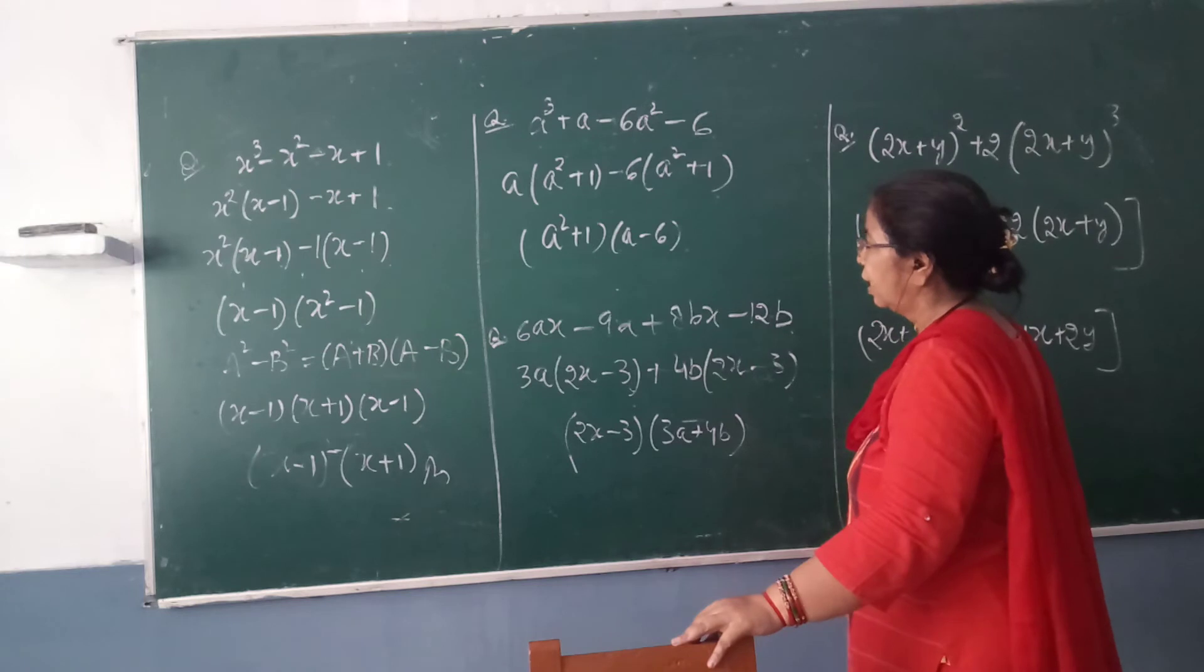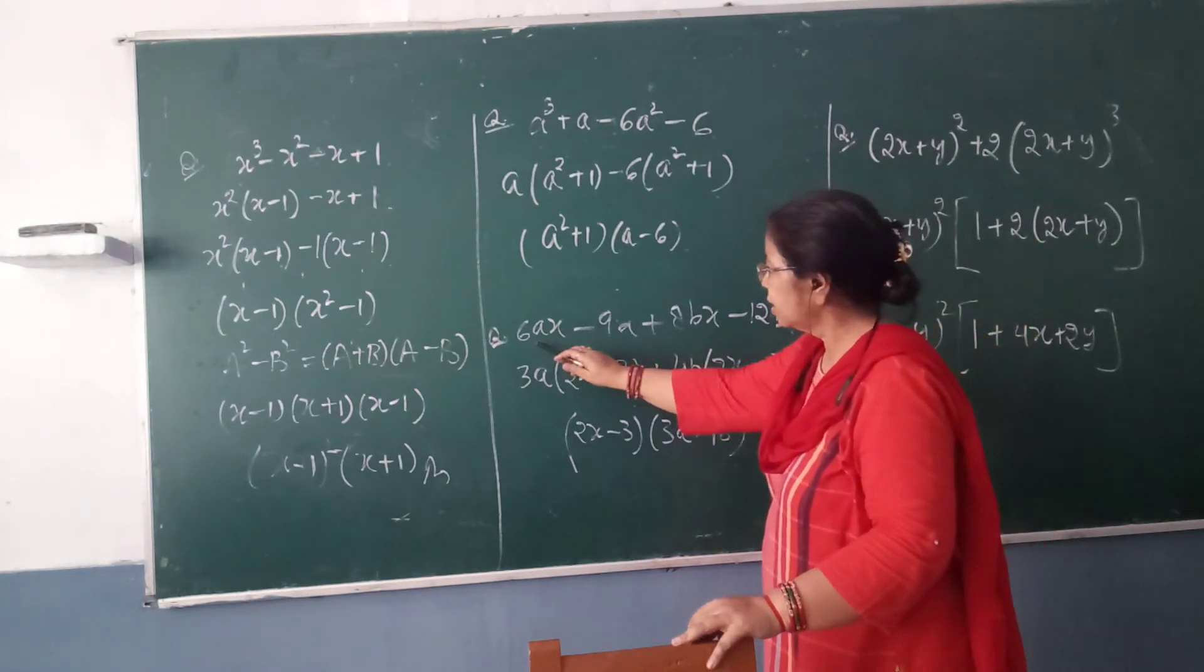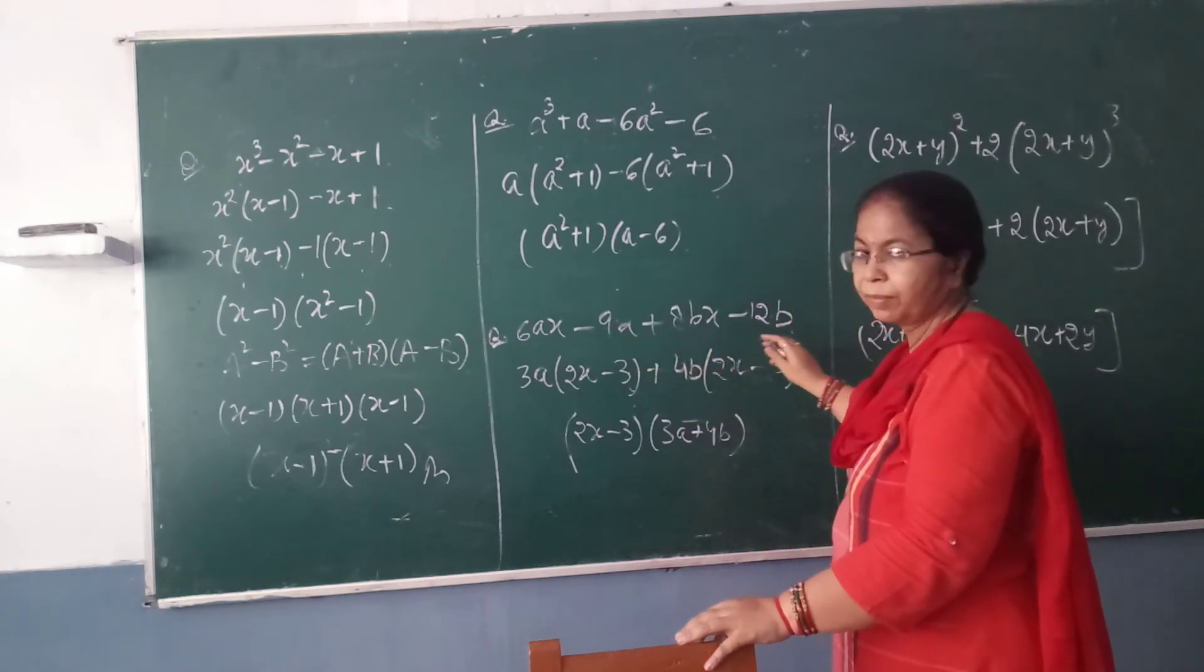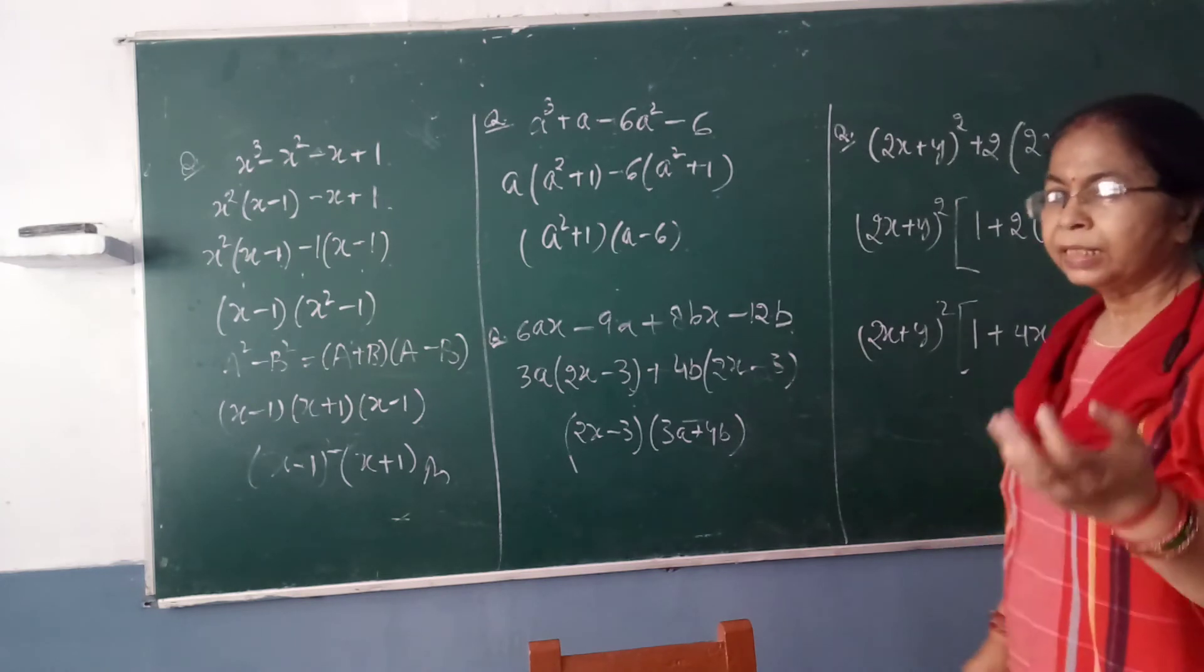Now one more question: 6ax - 9a + 8bx - 12. In the first two terms, you can see 6 and 9 both are coming in table 3, and a is also there. So what we can take common? 3a in bracket: 2x - 3.